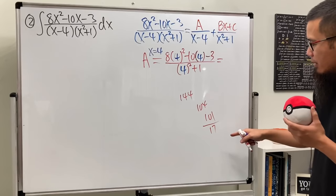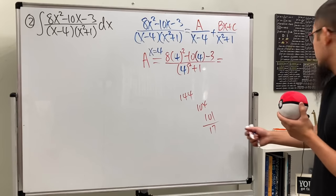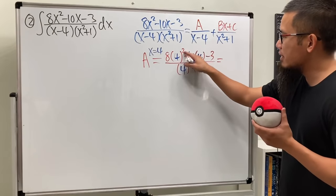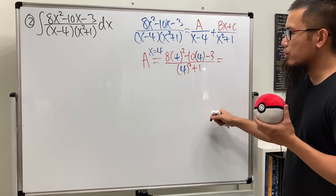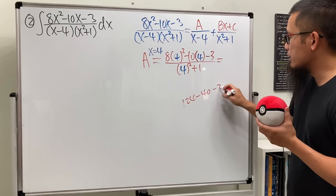And then this right here, it's not 3, it's not enough. Wait, why? So let's see, this is 16 times 8, which is going to be 124, and then minus 40, and then minus 3.